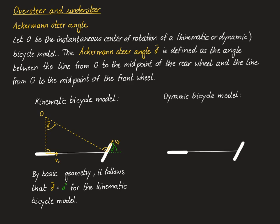Why is that? Looking at the three angles — delta, 90 degrees, and the remaining angle — they must sum to 180 degrees, so that angle is 90 degrees minus delta. Then the angles in the triangle must sum to 180 degrees: we have 90 degrees here and 90 degrees minus delta here, so delta bar must be equal to delta.